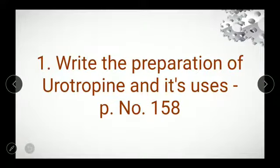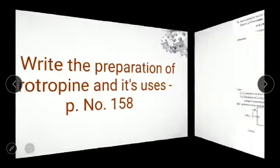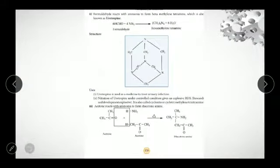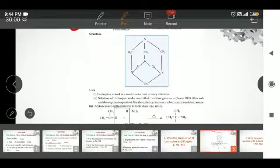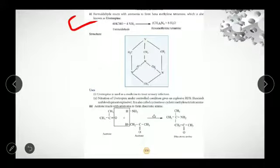First one. Write the preparation of urotropine and its uses in page number 158. This is the answer. You have to start from reaction with ammonia. Reaction with ammonia and here until this. Uses of urotropine. In page number 158. Note down the answer children.